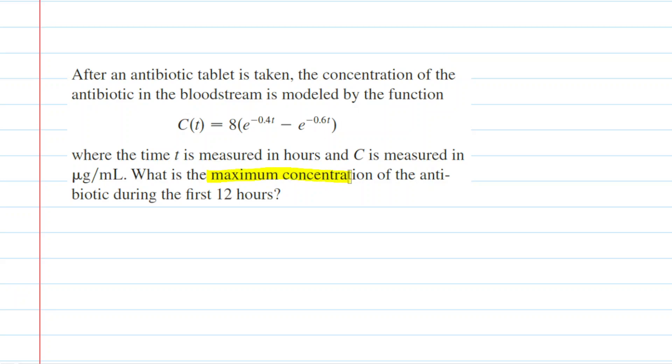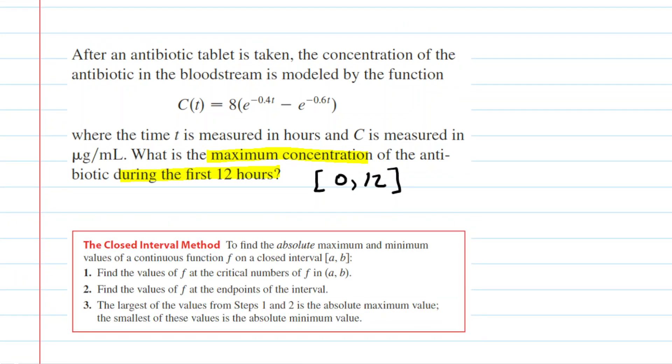We need to find the maximum concentration of an antibiotic during the first 12 hours. When they say during the first 12 hours, we have a closed interval from zero hours all the way up to and including 12 hours. Because we have a closed interval, we're going to use the closed interval method to find this absolute maximum concentration.